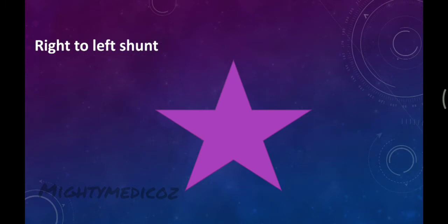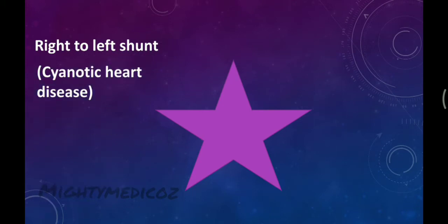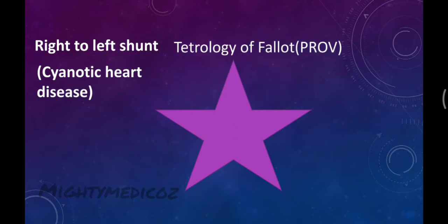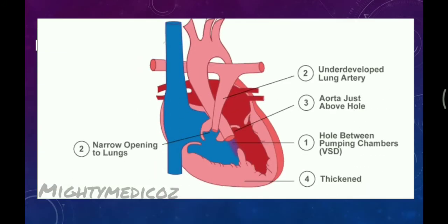The next part is right-to-left shunt, which is also called cyanotic heart disease. The mnemonic is PROVE: P is pulmonary stenosis, R is right ventricular hypertrophy, O is overriding aorta, V is VSD. This is the PROVE mnemonic for Tetralogy of Fallot.